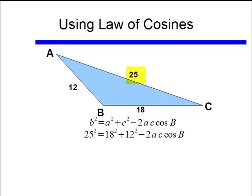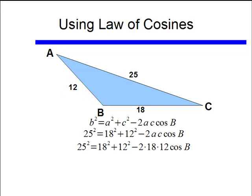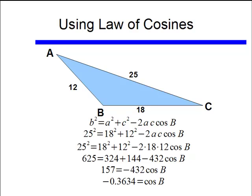I know the length of side B, that's 25. A is 18. Again we're going to the side across from the angle. Side C is length 12, and what we're looking for is cosine of B. If I do a little bit of math, I get down to negative 0.3634 equaling cosine of B.